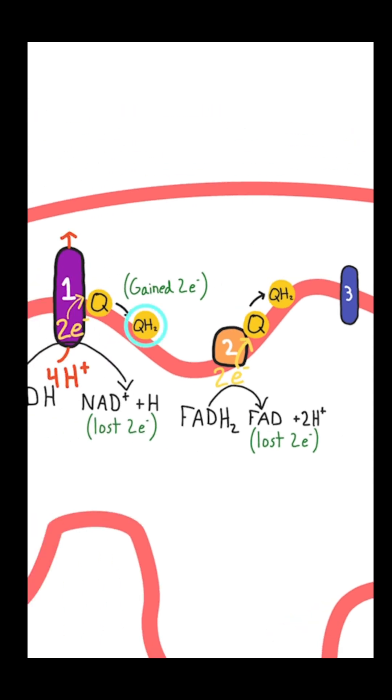The ubiquinol produced at Complex 1 and the ubiquinol produced at Complex 2 move over to Complex 3, and they're going to transfer their electrons here in a process called the Q cycle.